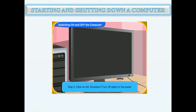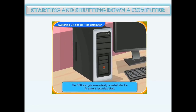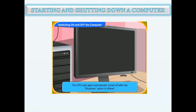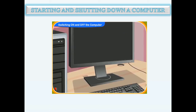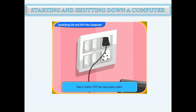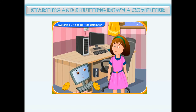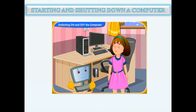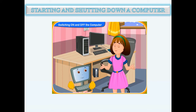The screen has now turned black — it means the computer is now turned off. The CPU also gets automatically turned off, so we are not required to turn off the CPU. Now switch off the monitor, then switch off the UPS, and finally switch off the main power socket switch. Now I hope you know how to switch on and off a computer. Always remember these steps while turning on or off a computer.